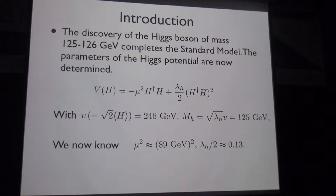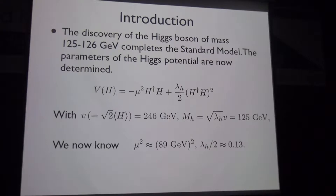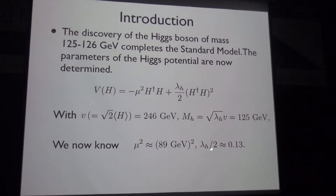The discovery of the Higgs boson completes the standard model. Its mass is about 125 GeV, which determines all parameters in the Higgs potential. The mass-squared term and quartic coupling are fixed by the vacuum expectation value and the Higgs boson mass. In particular, once the VEV is fixed, the Higgs mass is related to the quartic coupling, which is quite small and perturbative.